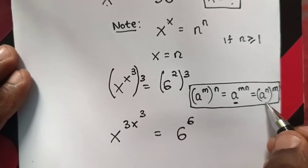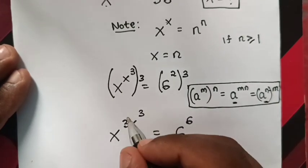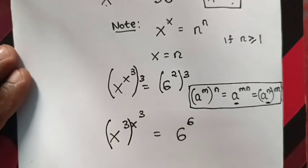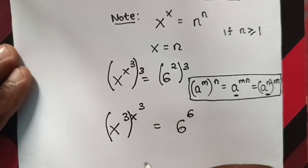Then we apply the exchange of power inside the bracket. We will compare: base (x^3) equals 6 and the power (x^3) equals 6.